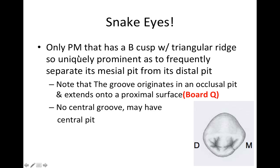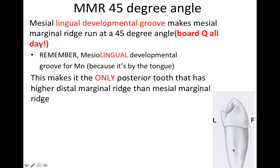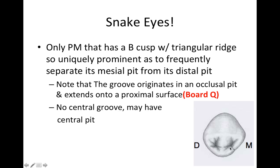This tooth is famous for its 'snake eyes.' It's the only premolar that has a buccal cusp with a triangular ridge so uniquely prominent that it features a mesial pit and a distal pit — those are the snake eyes. Note that the groove originates in an occlusal pit and extends onto a proximal surface. It starts in the mesial pit and runs over to the lingual groove. There's no central groove because of that big triangular ridge, and it may have a central pit.